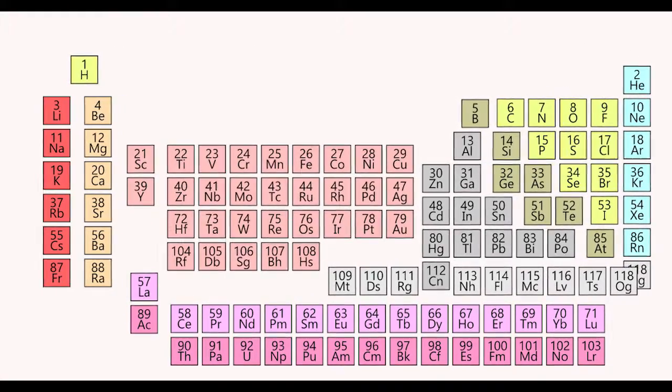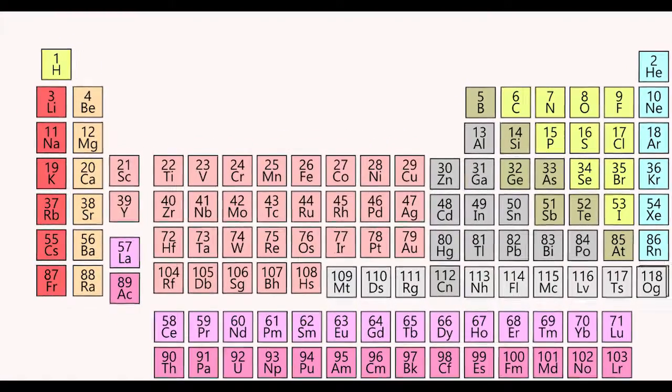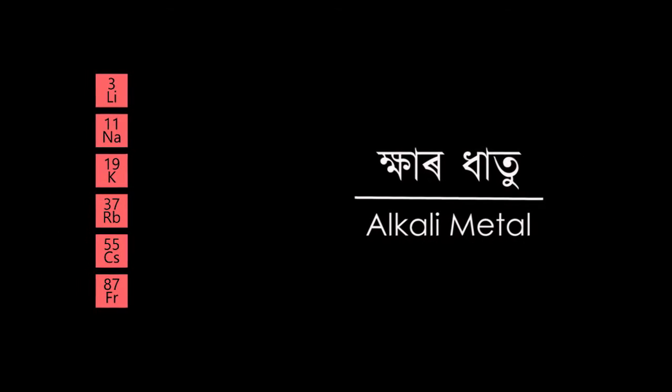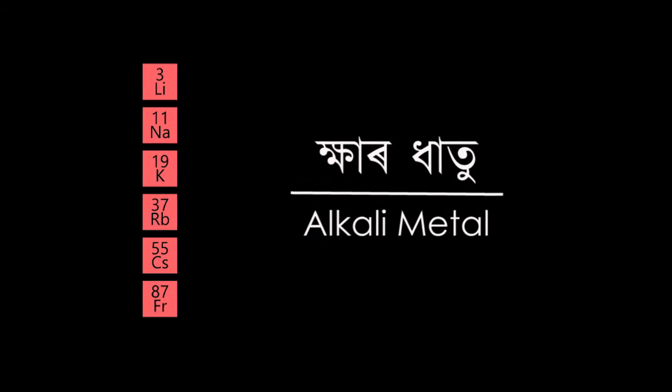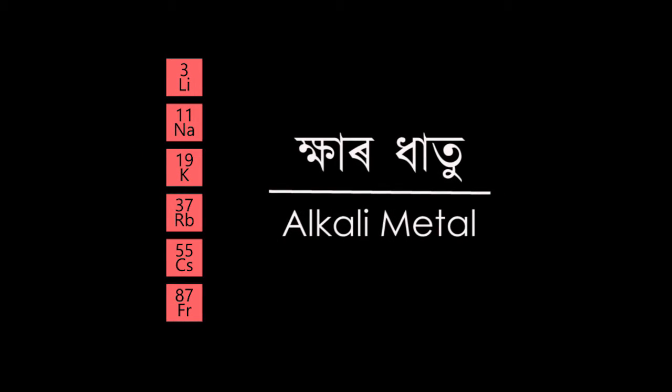The rows are called periods and the columns are called groups. The elements of the first group, except hydrogen, are called alkali metals. They are alkaline in nature because they react with water to form concentrated base.